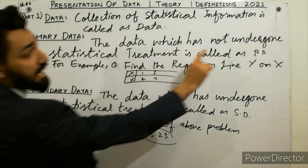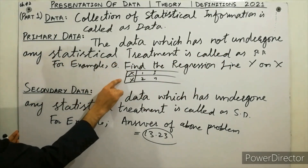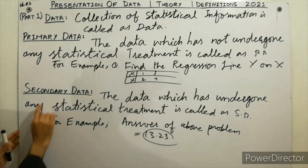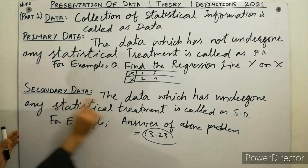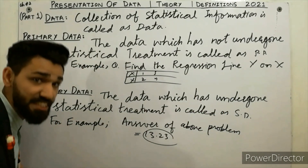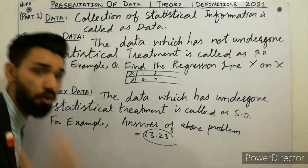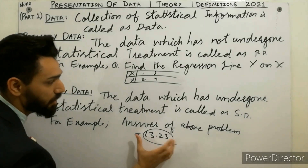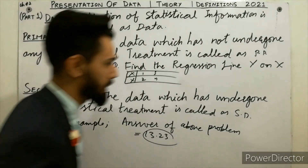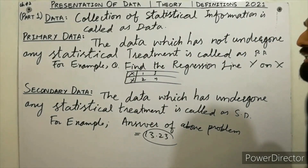To summarize: the given raw question data which has not undergone any statistical treatment is called primary data. Secondary data is the processed result — it has undergone statistical treatment, such as a solved answer. I hope you can now understand both parts clearly.